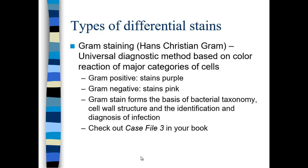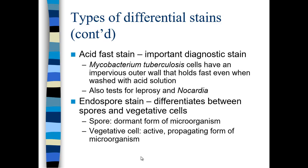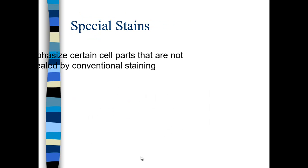Gram-negative bacteria have thinner cell walls; gram-positive have thicker cell walls. Other types of stains include acid-fast stains. Certain bacteria resist acid attack — primarily Mycobacterium tuberculosis, which has an impervious outer layer that resists acid attack. Acid-fast bacteria can be stained in a differential procedure, and this test also applies to bacteria that cause leprosy and Nocardia. Endospore stains will stain spores a different color than vegetative cells — we'll do this in the laboratory.